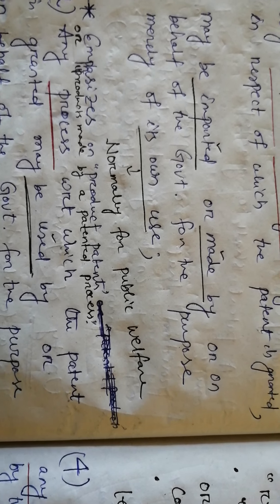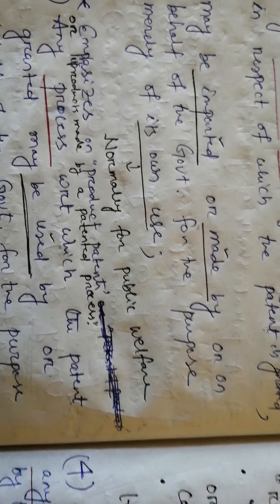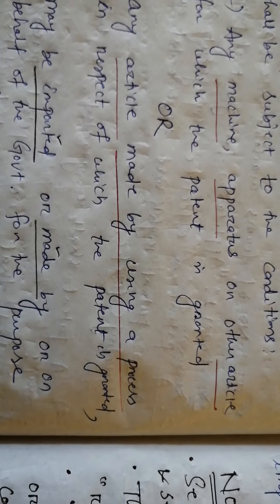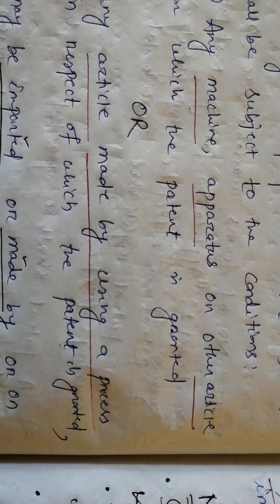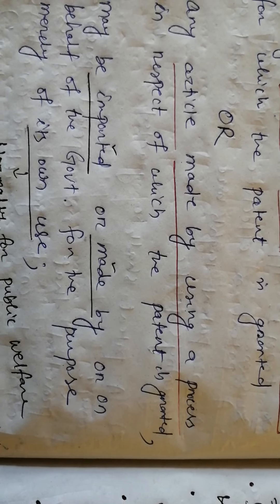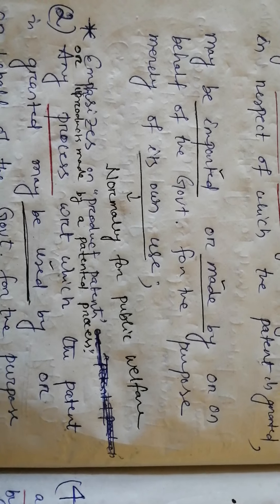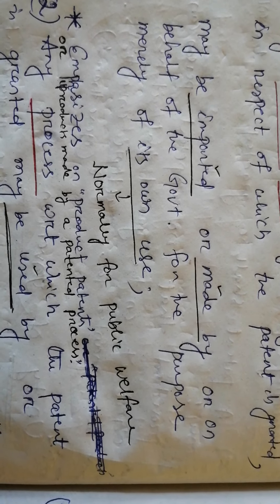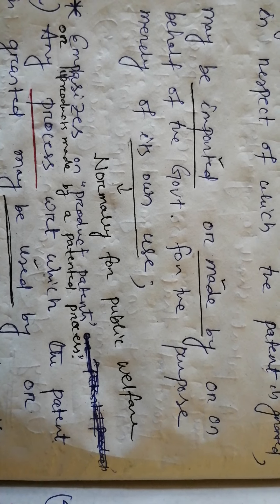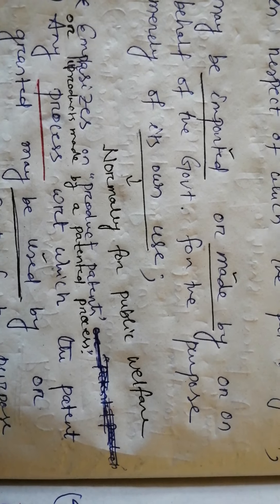Merely of its own use means normally for public welfare. The underlined words 'machine, apparatus and other article' come under the category of products, and 'article made by using a process' comes under process. So the first part is for product patents and the second is for process patents. Subsection 1 emphasizes product patents or products made by a patented process, or process patents.